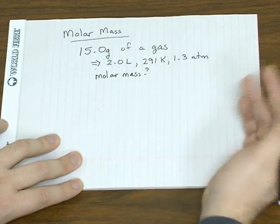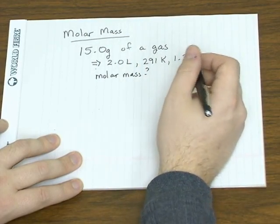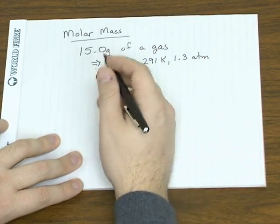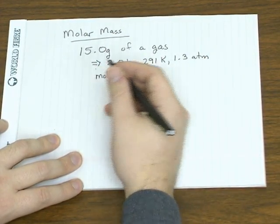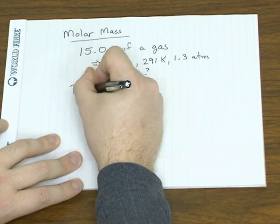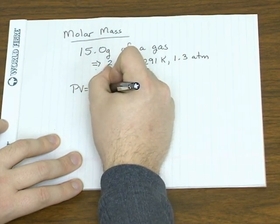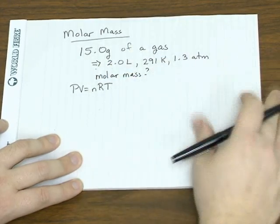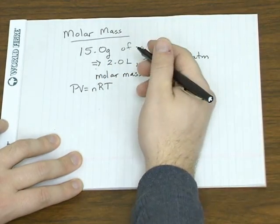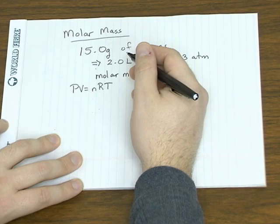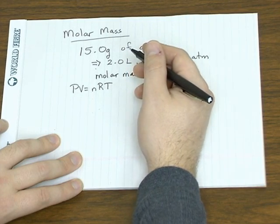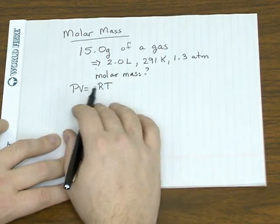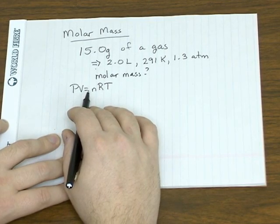Now any time you're working with a gas and you're dealing with pressures and volumes, for problems like this it's always a good idea to start with PV equals nRT, because you probably need to use the ideal gas law somewhere in the problem.